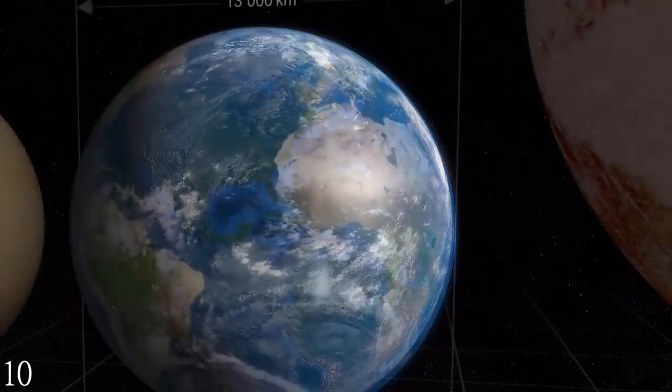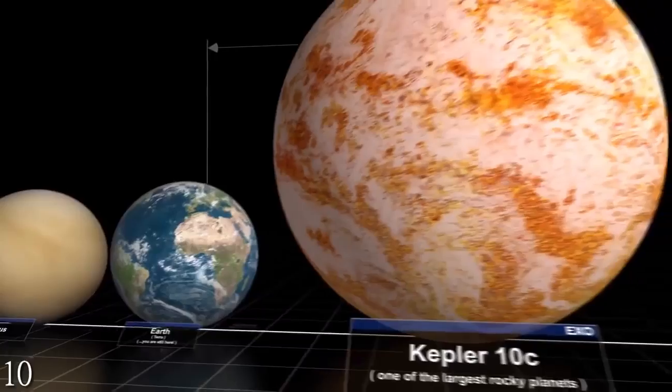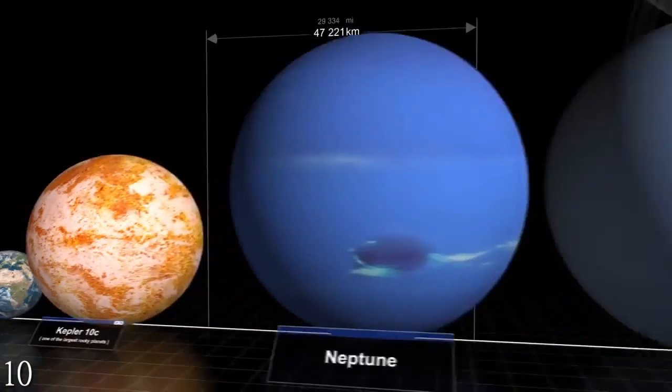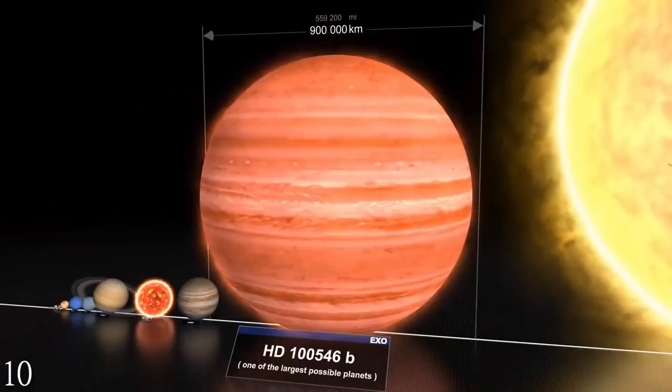Within our solar system, we are the fourth largest planet. After us, we are dwarfed by Neptune, Saturn, Jupiter, and our own star, which is 93 million miles away from us, the Sun.